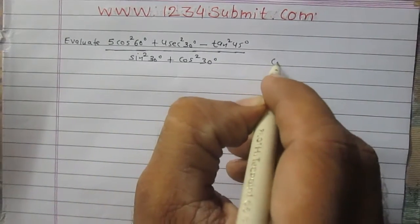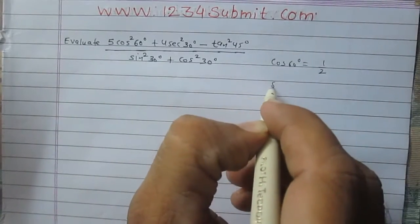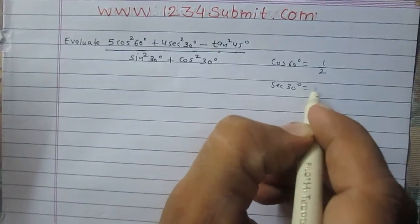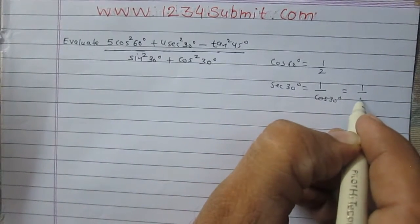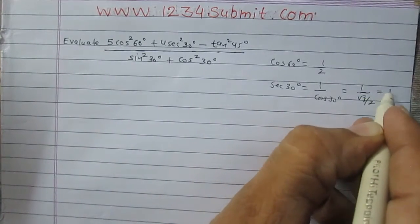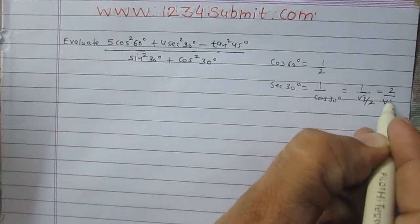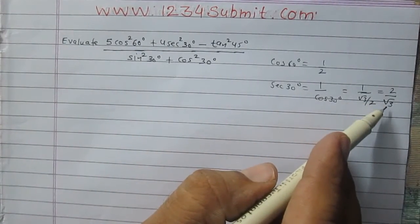We know that cos of 60 degree is 1 by 2. Sec of 30 degree is reciprocal of cos 30 degree, so it is 1 divided by square root 3 by 2, that is 2 by root 3. So sec 30 degree is 2 divided by root 3.